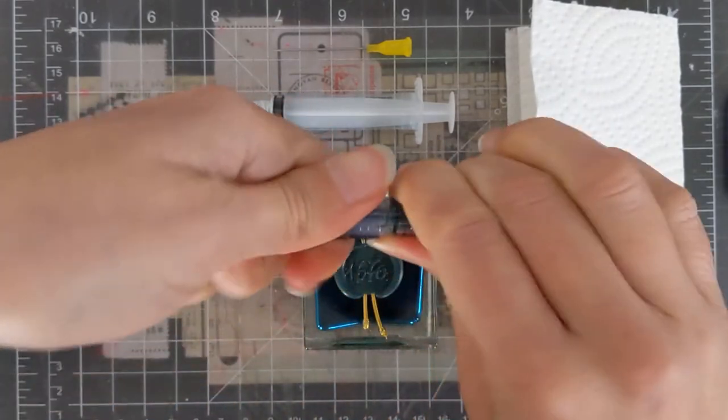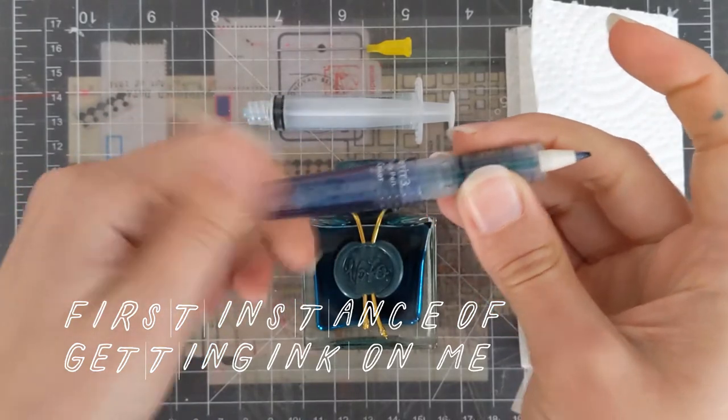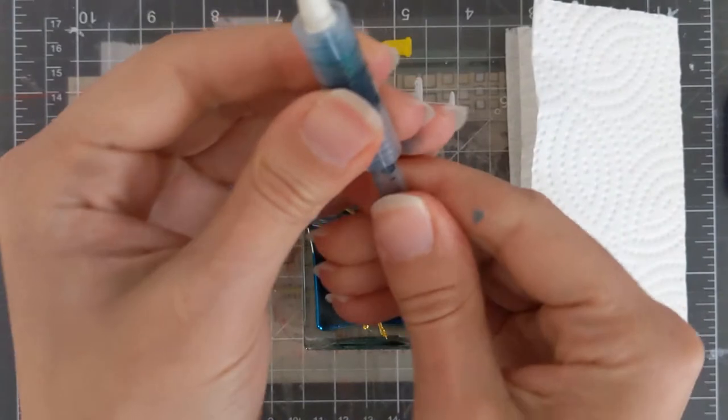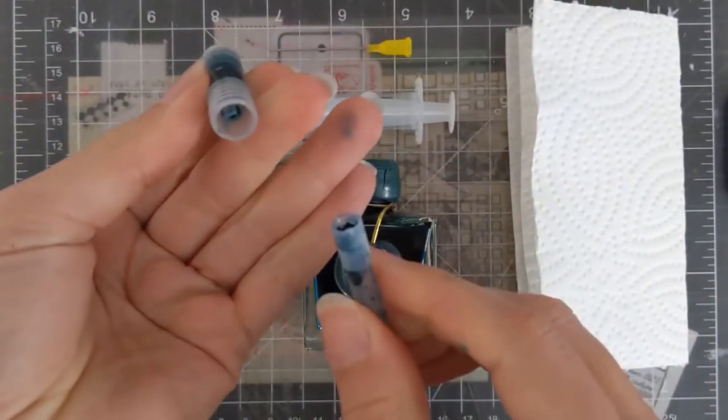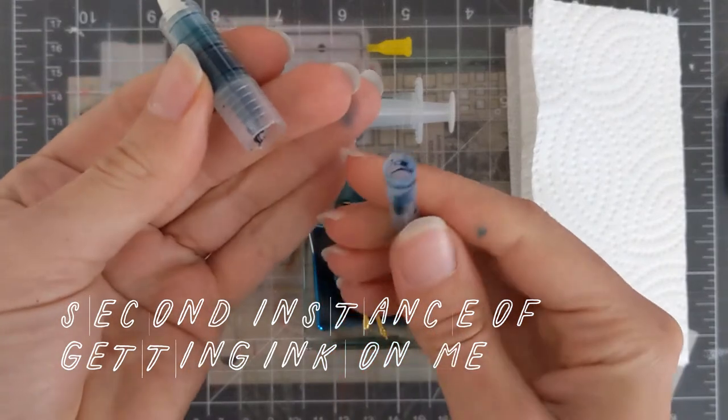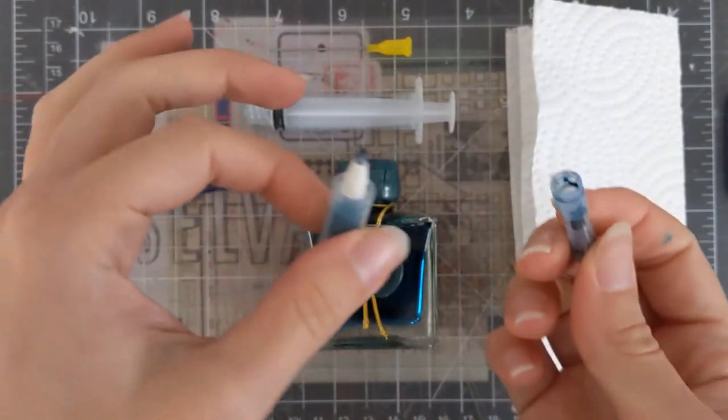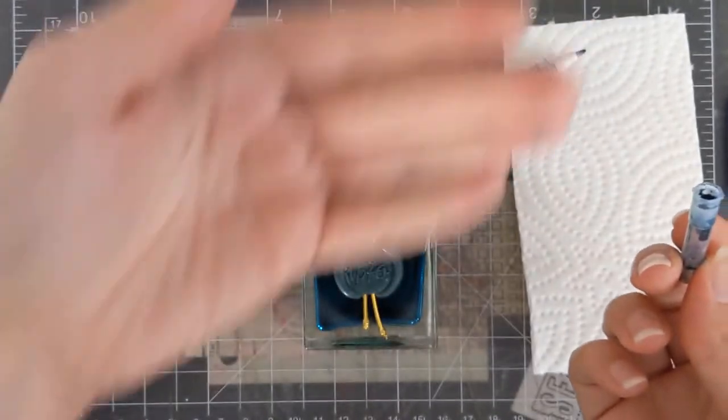I screwed it on really tight, but you can see that it is cartridge-fed. So this is a little cartridge. You just shove it on there and it feeds ink into the tip. A lot of different pens work like this. A lot of fountain pens work like this.